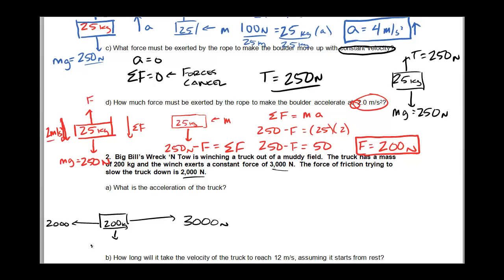So let's look at everything that's happening. I have a 200 kilogram mass, and I'm pulling on it with a winch with 3,000 newtons worth of force. The friction is pulling back with 2,000 newtons.